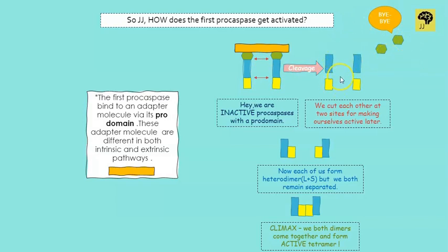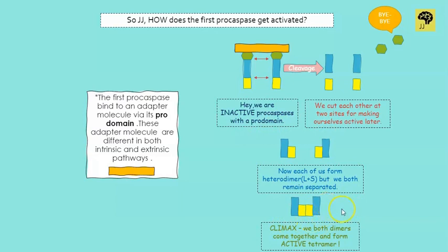After cleavage, the pro-domains are released. We are left with a large subunit and a small subunit from each pro-caspase. Two such large and small subunits come together to form a heterodimer. Similarly, caspase 2 also forms a heterodimer with its large and small subunit. However, these heterodimers are still inactive. To become active, both heterodimers must come together to form a tetramer — four subunits total. This tetramer is the active form. Active caspases can then go on to cleave and activate other caspases.